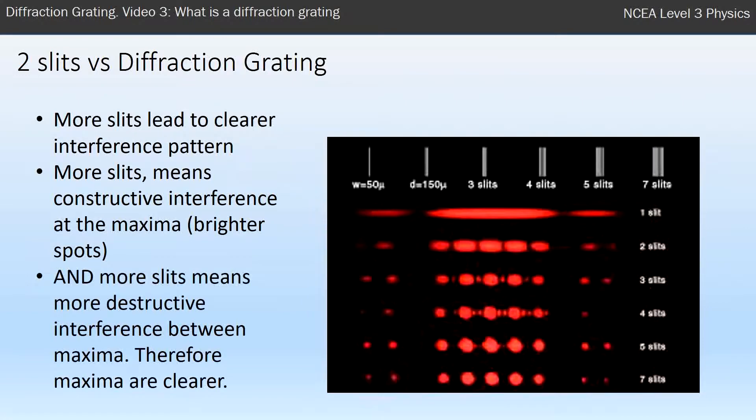The same sort of effect happens, and it's probably more important, in between the bright spots. You've got more chances with more slits for destructive interference to happen, and that really cancels the light out properly. Compared to a double slit, where you can still see some light in between the bright spots, when you get to more and more slits, it's clearly dark in between—there's full destructive interference.